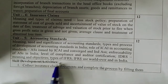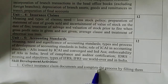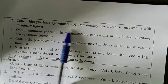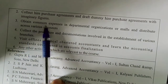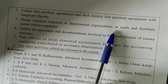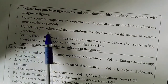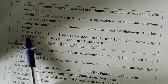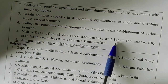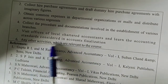Skill development activities for this course include: collecting insurance claim documents and completing the process by filling them; collecting hire purchase statements and drafting dummy hire purchase agreements with imaginary figures; obtaining common expenses in a departmental organization or mall and distributing them across various segments; collecting procedures and documents involved in the establishment of various branches; and visiting offices of local chartered accountants to learn the accounting standards considered in account finalizations.